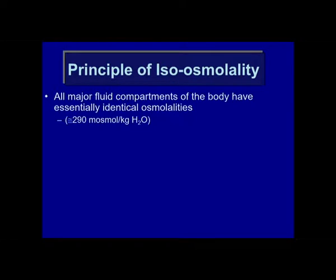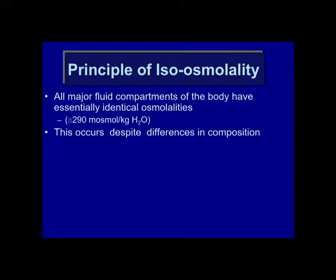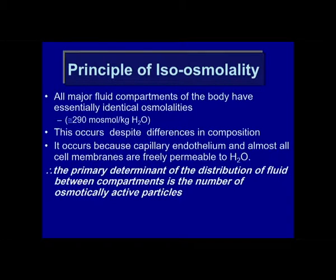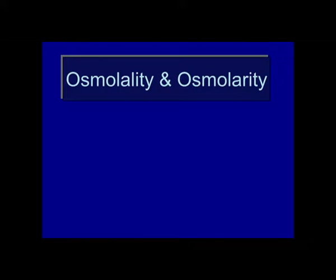There is this principle of isoosmolality — all major fluid compartments of the body have essentially the same osmolality, around 290 milliosmoles. This occurs despite differences in composition, and it occurs because the capillary endothelium and almost all cell membranes are freely permeable to water. The primary factor determining that distribution is the number of osmotically active particles in each region — discrete particles independent of their valence.